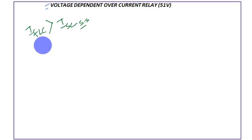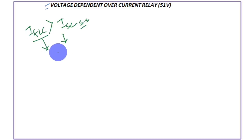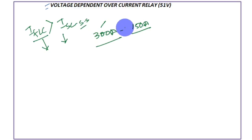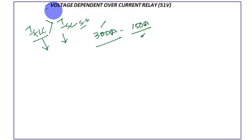In that case, if you have to select a relay pickup, you have to keep it higher than full load current but lower than short circuit current — which is not possible. Suppose your full load current is 300 amperes and your steady state short circuit current is 150 amperes; you would need to select something higher than 300 but lower than 150, which is practically a fallacy. To counter this, a voltage dependent parameter must be introduced.